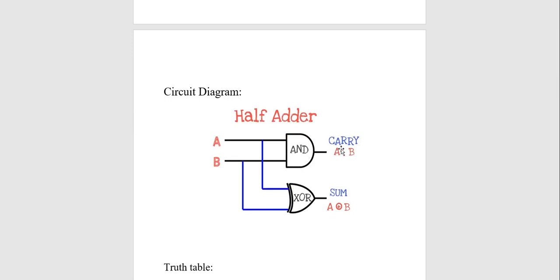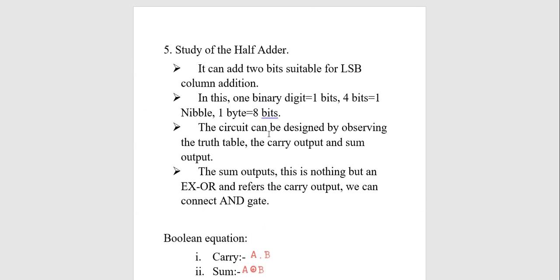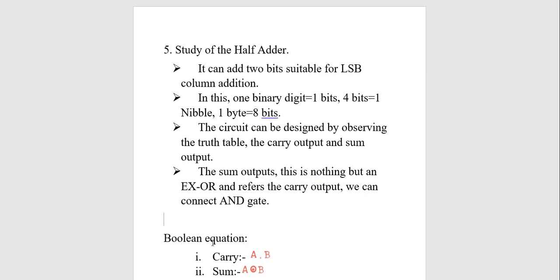The AND gate is used for the carry — wherever a carry is generated, the AND gate is used. For creating the sum, the XOR gate is used. We will first see that this circuit is designed by observing the truth table for the carry output and sum output. For finding the sum output you need an XOR gate, whereas for finding the carry output you connect the AND gate. These are the two gates used for designing the half adder.